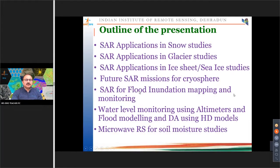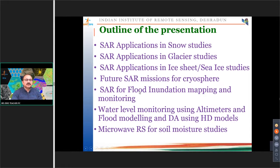This is the overall outline of the presentation. First I'll be covering the major applications of synthetic aperture radar for snow — basically how we can retrieve snow physical parameters — then how we can map glacier velocity, radar zones, and mass balance studies. Then covering ice sheets and sea ice dynamics, future SAR missions for the cryosphere, and operational flood inundation mapping and monitoring.